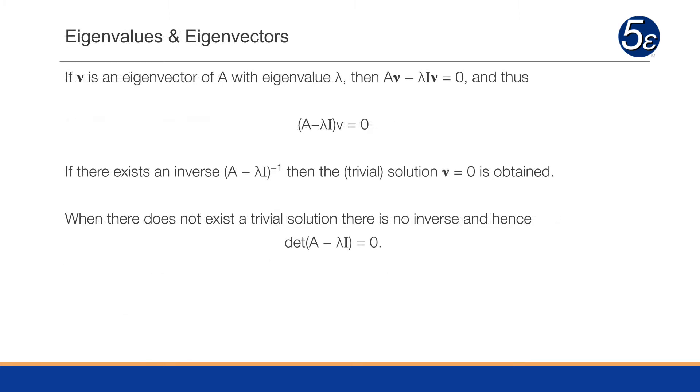So that's what we have here. If nu is an eigenvector of A with eigenvalue lambda, then A times nu minus lambda times the identity matrix times nu will equal zero. And therefore, we end up with A minus lambda I times the vector equals zero.